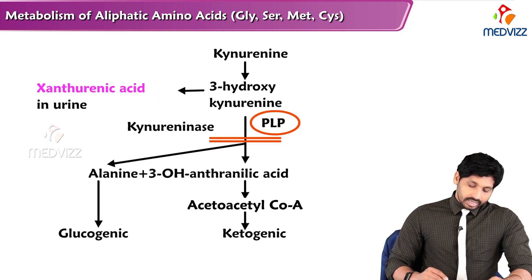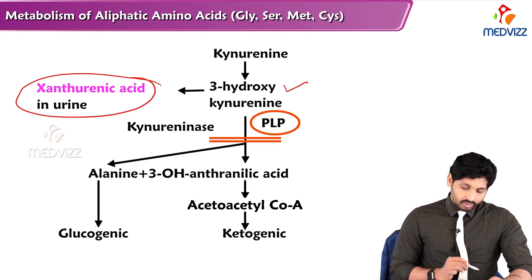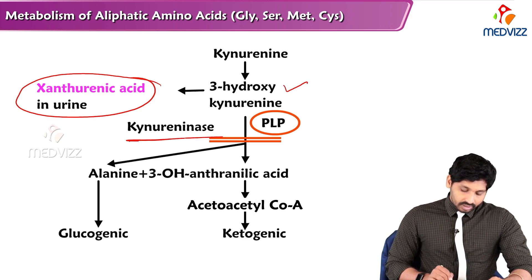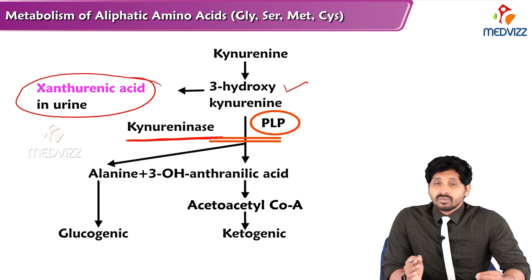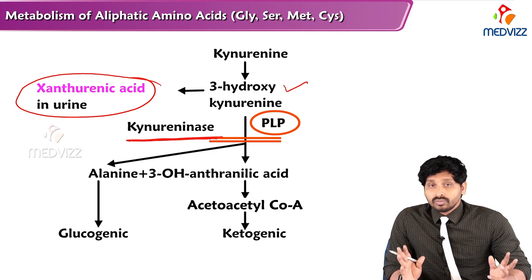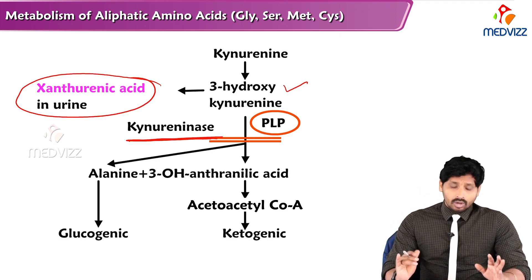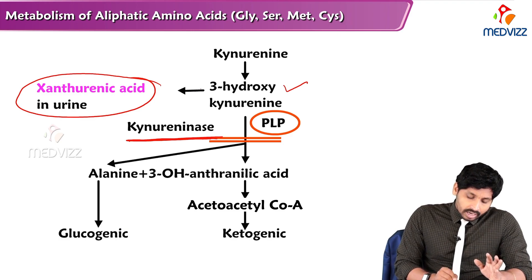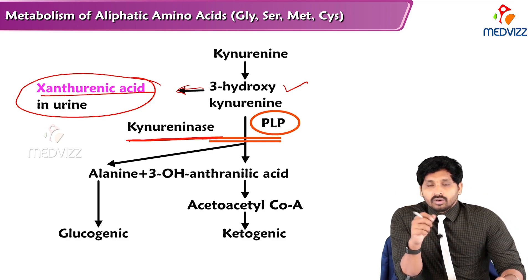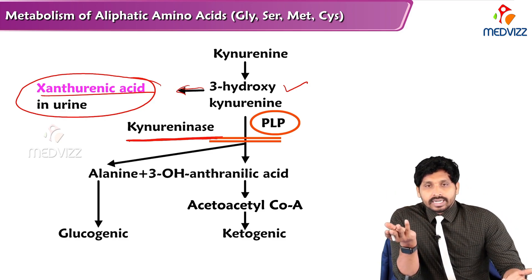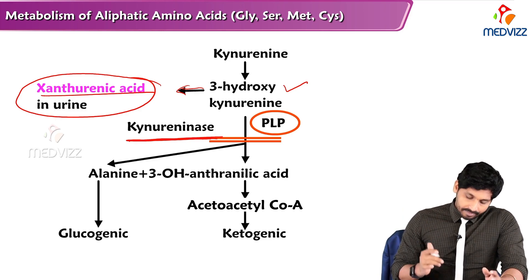In the kynurenine pathway, kynurenine is converted to 3-hydroxykynurenine, and xanthurenic acid can be detected in urine. Due to deficiency of kynureninase — a PLP-dependent enzyme — in vitamin B6 deficiency, there is no conversion of 3-hydroxykynurenine to 3-hydroxyanthranilic acid for NAD synthesis. As a result, 3-hydroxykynurenine accumulates and is converted to xanthurenic acid, which is excreted in the urine.